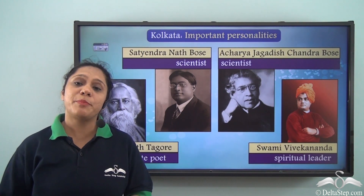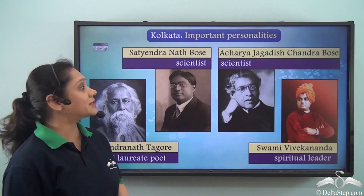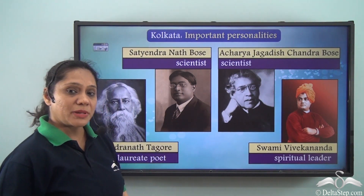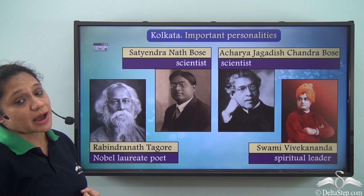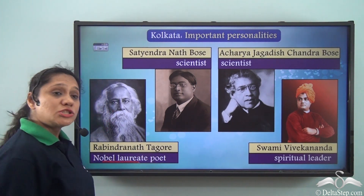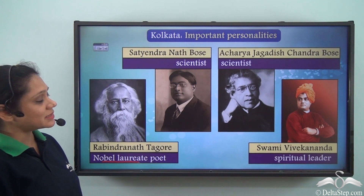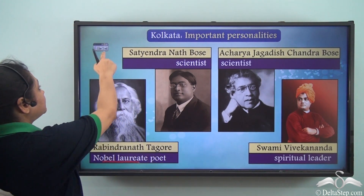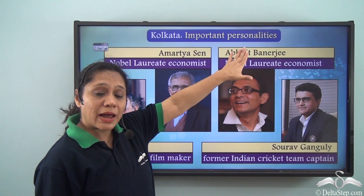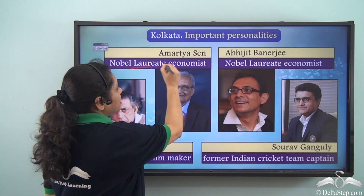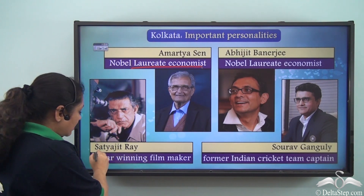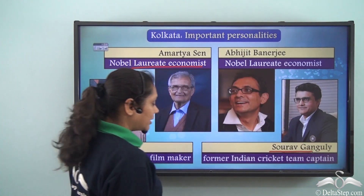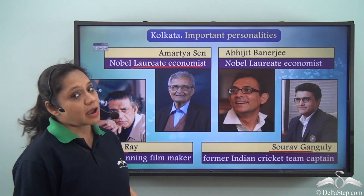Let us talk about important personalities who hail from this great city. Satyendranath Bose and Acharya Jagdish Chandra Bose are two famous scientists from here. Rabindranath Tagore, who penned our national anthem and was a Nobel laureate, hails from this city. Swami Vivekananda, the spiritual leader, is also from here. Amartya Sen and Abhijit Banerjee, both Nobel laureate economists, are from Kolkata. Satyajit Ray, the Oscar-winning filmmaker, and Sourav Ganguly, the former Indian cricket team captain, are also from this city.